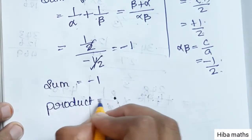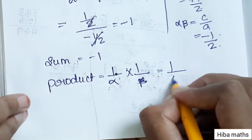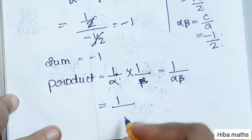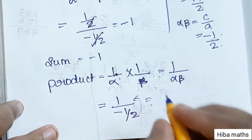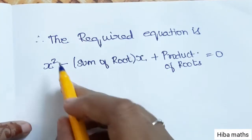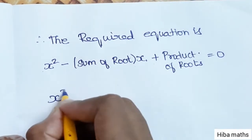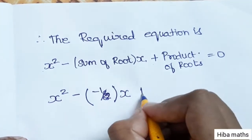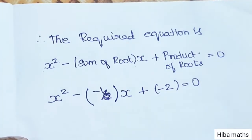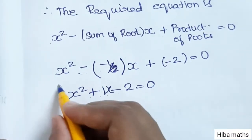Product of roots = 1/alpha × 1/beta = 1/(alpha × beta) = 1/(-1/2). This is the reciprocal, so product = -2. The required equation is x² - (sum of roots)x + (product of roots) = 0. Substituting: x² - (-1)x + (-2) = 0, which simplifies to x² + x - 2 = 0. This is the required equation.